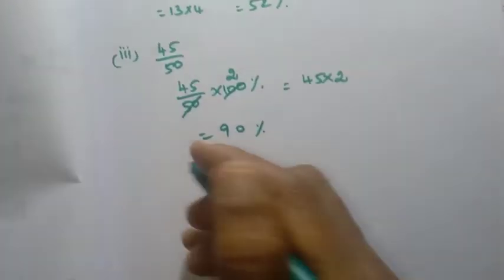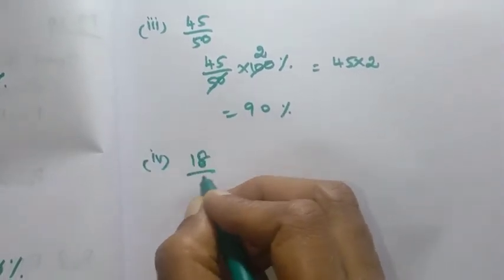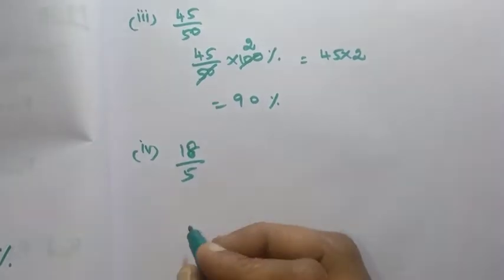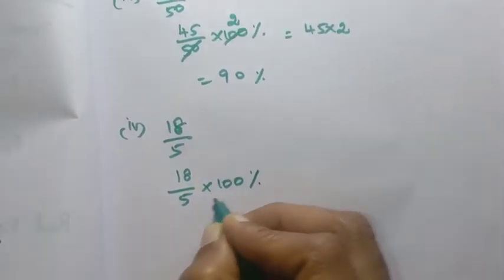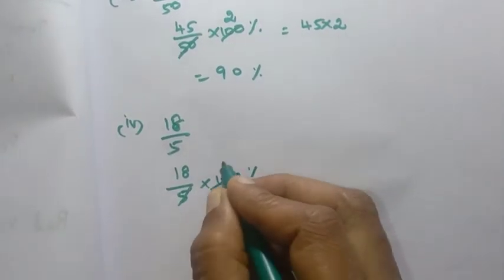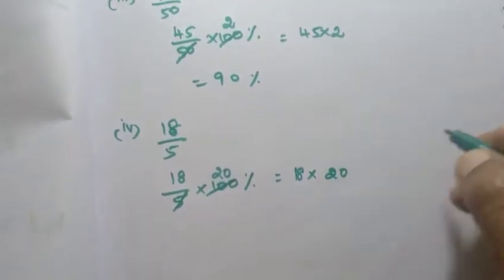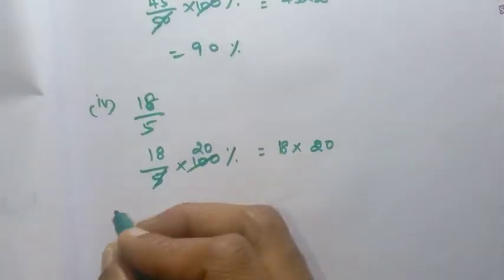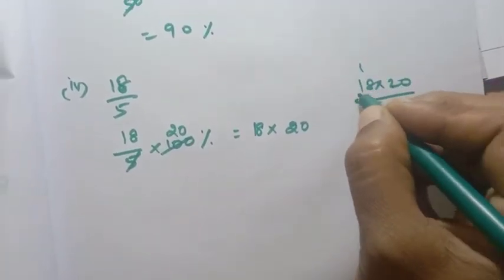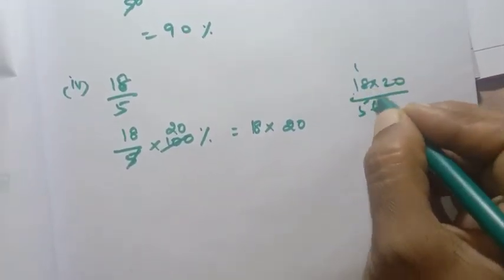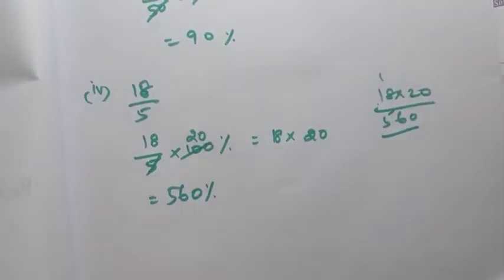Fourth sum: 18 by 5. Percentage = 18 by 5 into 100. 5 twenties are 100. So 18 into 20: 8 twos are 16, 2 twos are 4 — equal to 360... that gives 560 percentage.